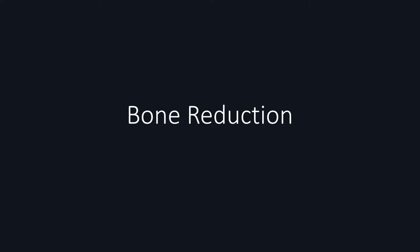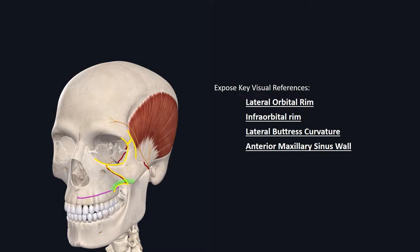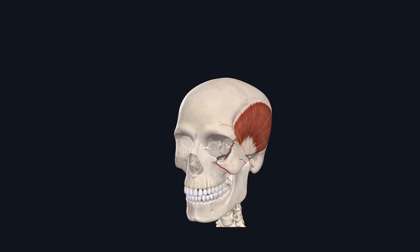Next, we'll discuss bone reduction techniques. Key visual references to identify and correct include the lateral orbital rim, infraorbital rim, the lateral buttress curvature, and the anterior maxillary sinus wall along the fracture line. Your goal during bone reduction is to restore normal bone curvature at these key reference locations. For badly displaced fractures, I'll generally use a J-shaped male urethrodilator to reduce the bone. You'll note gross disruption of the lateral buttress curvature, and as you dissect subperiosteally to reach the infraorbital rim, you identify the infraorbital nerve. Through the lateral brow incision, check the lateral orbital rim — you'll note that the visual reference there is also malaligned.